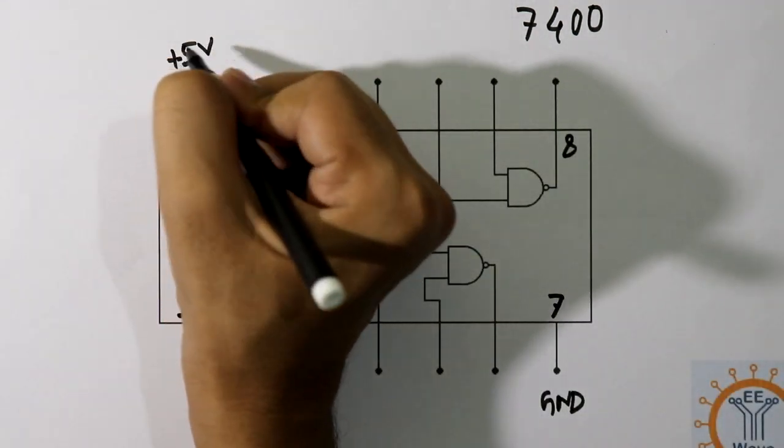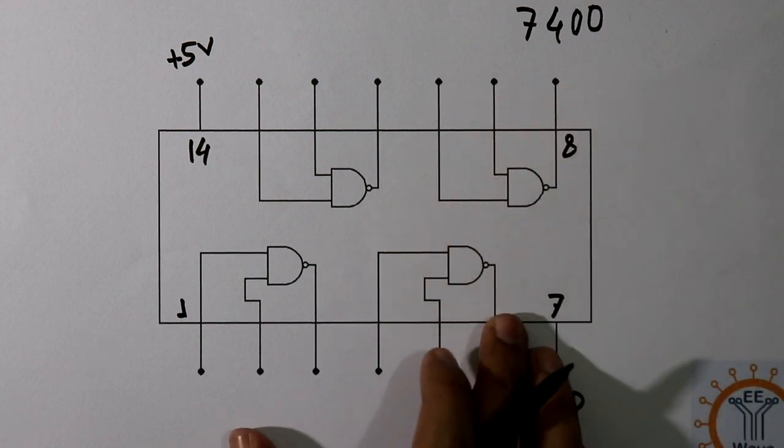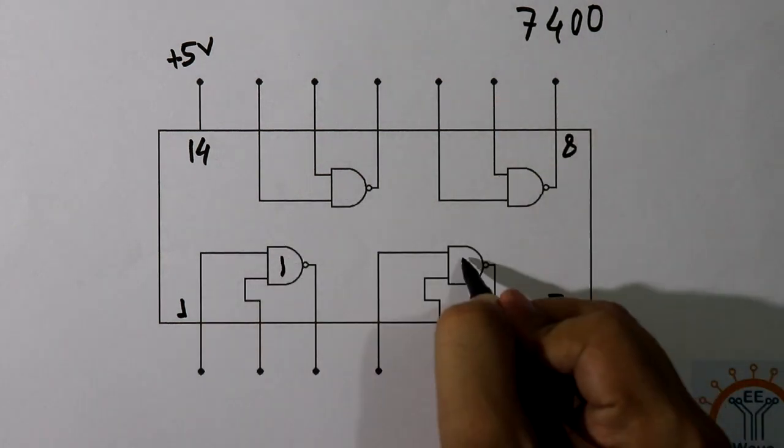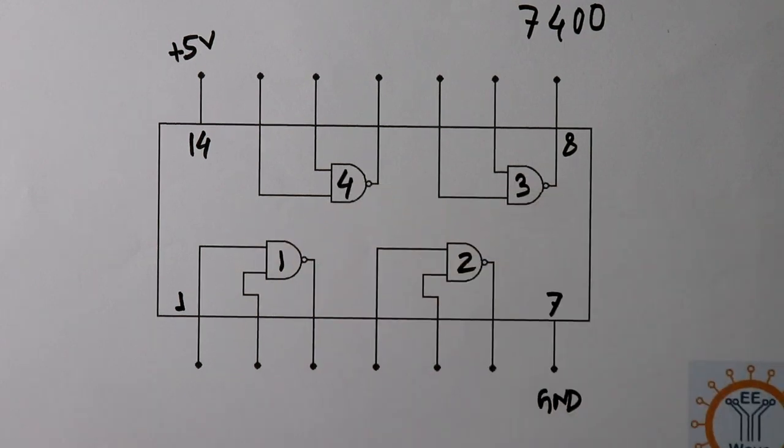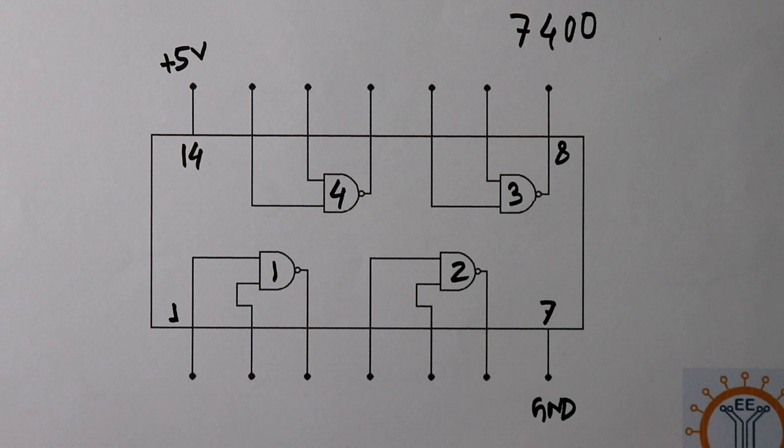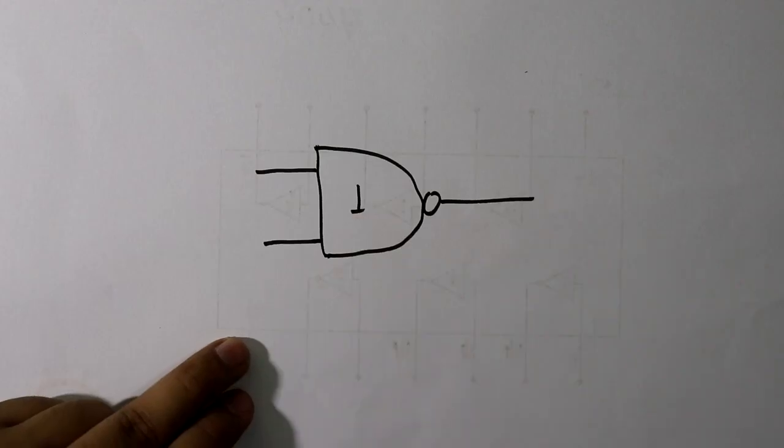Now IC 7400 having 4 NAND gates: NAND gate 1, NAND gate 2, NAND gate 3, and NAND gate 4. On the breadboard connection we will see only NAND gate 1.